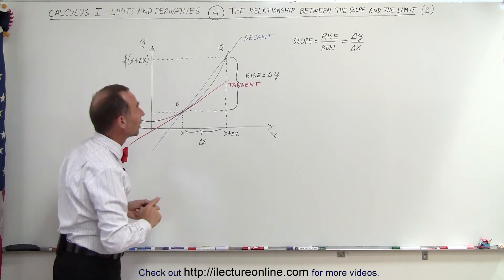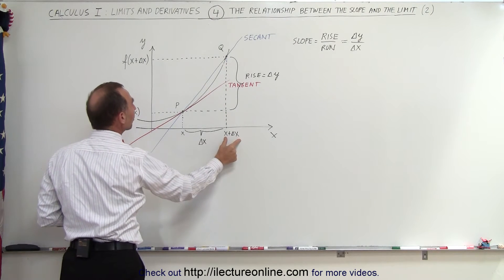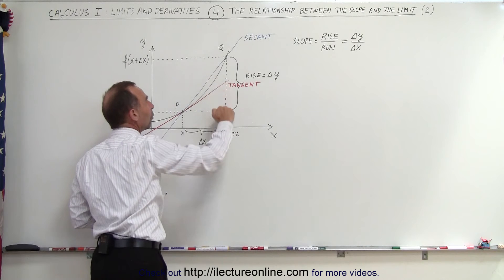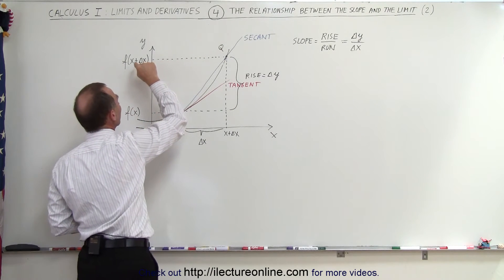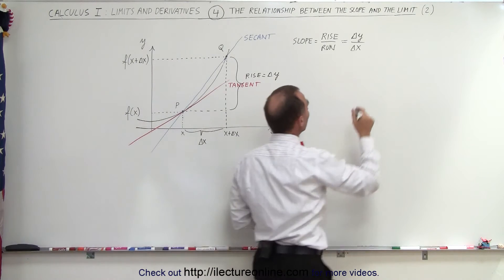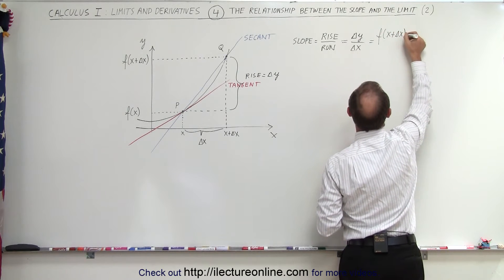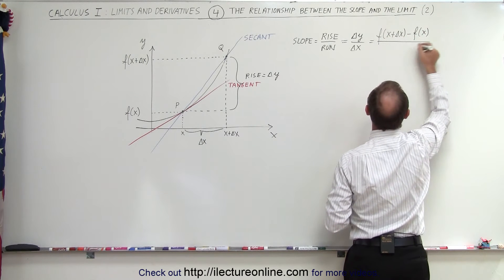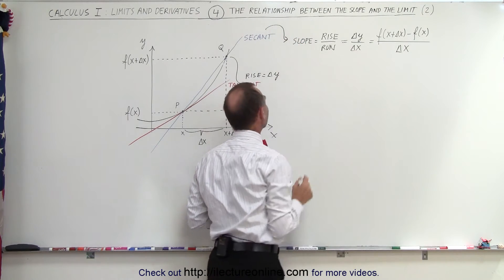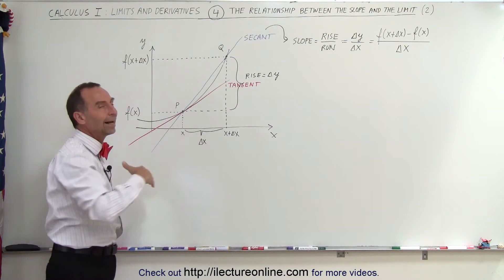The run is the change in x values and the rise is the change in y values. The y value for Q can be found by taking the x coordinate x plus delta x and plugging it into the function to get f of x plus delta x. So the rise equals the function evaluated at x plus delta x minus the function evaluated at x, all divided by delta x. That is the slope of the secant line — not the tangent line — and it approximates the slope of the function at point P, but not exactly.